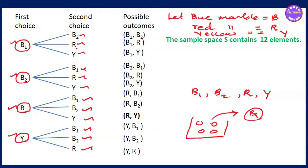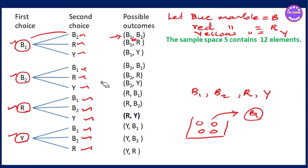From the tree diagram I get the possible outcomes: B1R, B1Y, B2B1, B2R, B2Y, RB1, RB2, RY, YB1, YB2, YR. So the sample space n(S) is equal to 12.